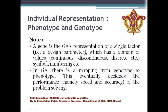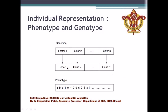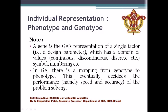Each gene has a domain of values. Those values can be continuous, discontinuous, or discrete. The domain can include values, symbols, numbers, or strings. Because we don't know the exact nature of each factor, we do the corresponding mapping — there can be continuous values, discontinuous values, discrete values, symbols, numbers, or strings.